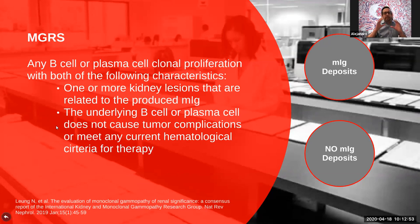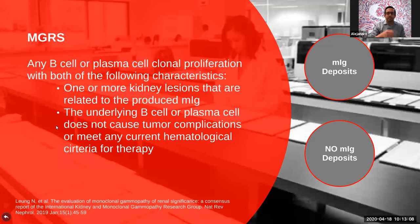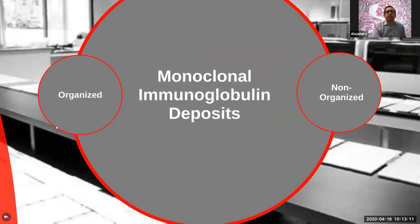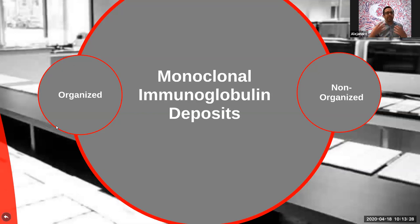We start by dividing these diseases into two main groups: those that have monoclonal deposits in the kidney, and — although counterintuitive — a group of diseases that, even though they're caused by monoclonal imbalance, don't actually have deposits in the kidney. To differentiate the first group into organized and non-organized deposits, we need electron microscopy. Not everyone has access to it, and that's okay — you don't necessarily need it to make these diagnoses, but it's very helpful if you do.